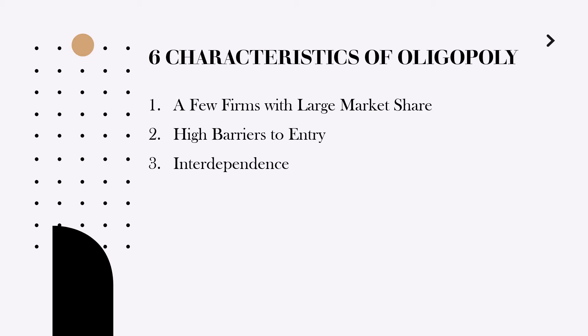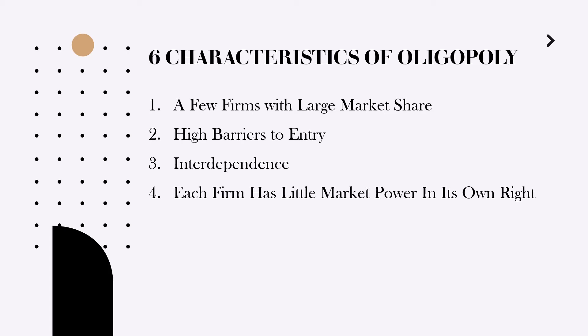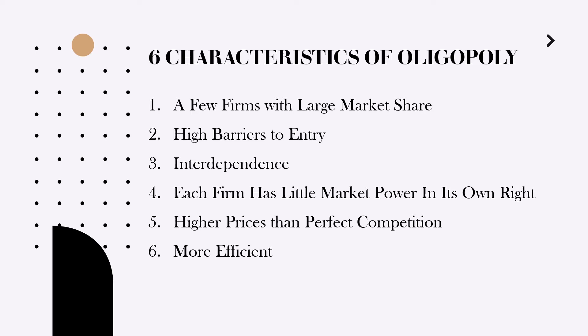Second, high barriers to entry. Third, interdependence — all the big players are interdependent in their decisions, particularly in their pricing decisions. Fourth, each firm has a little market power in its own right; each oligopolistic company must consider the decisions of their competitors, and thus they are limited in their market power. Fifth, higher prices than in perfect competition, and sixth, oligopolies are more efficient compared to monopolies.